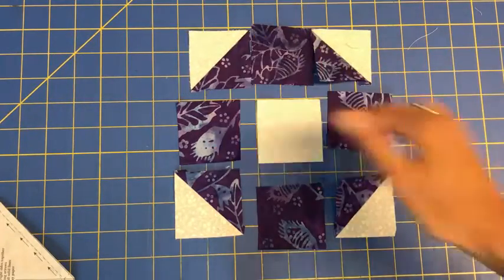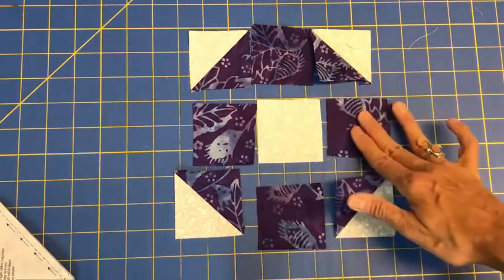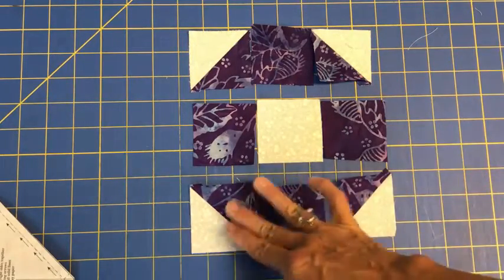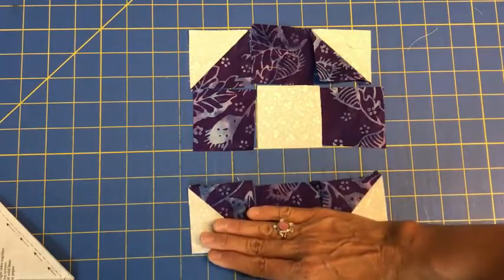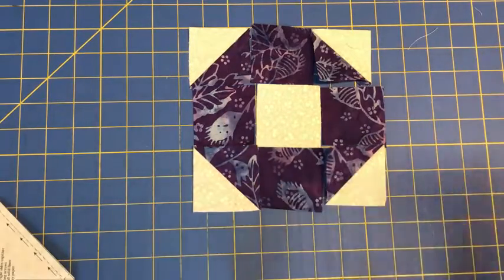You're going to sew those three together first, you're going to sew these three together, and you're going to sew these three together, and now you're going to sew this row to that one, and this row to that one, making your block.